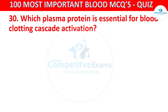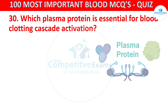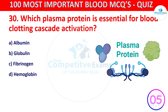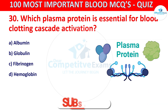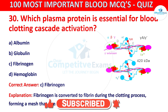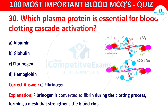Question 30: Which plasma protein is essential for blood clotting cascade activation? The options are Albumin, Globulin, Fibrinogen, or Hemoglobin. The correct answer is C, that is Fibrinogen. Fibrinogen is converted to Fibrin during the clotting process, forming a mesh that strengthens the blood clot.